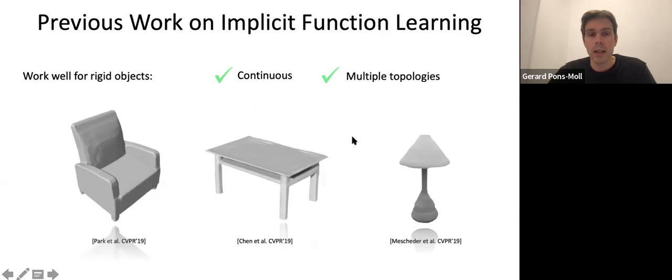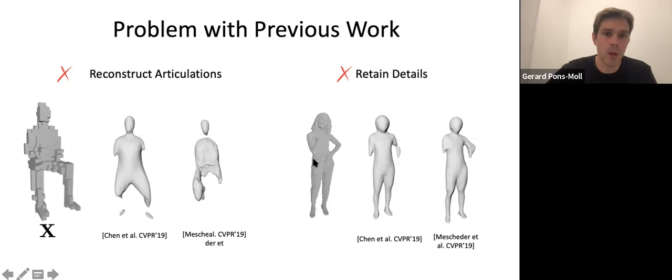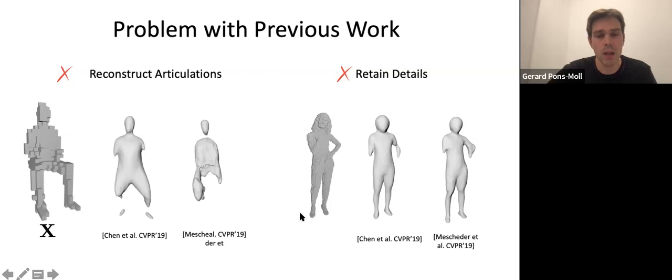However, when we tried this for reconstructing more complex objects like humans with articulation, the results were not satisfactory. We observed that limbs were often missing. We're reconstructing the full surface given low-resolution voxels as input, with high-resolution voxels on the right side. The missing limbs were a systematic problem, and when the input was more detailed, those details were not present in the output. So we wanted to investigate deeper what the actual problem was.